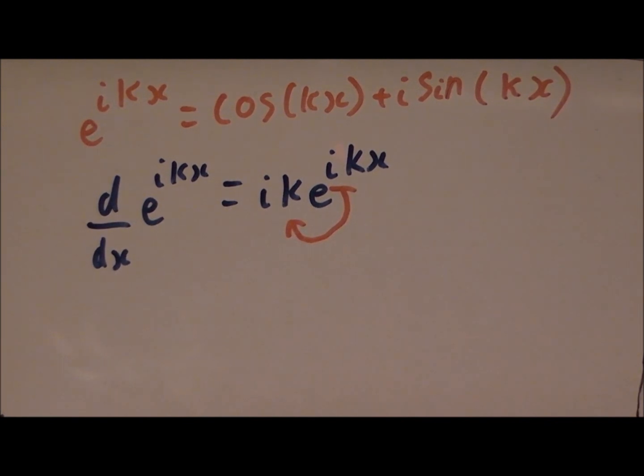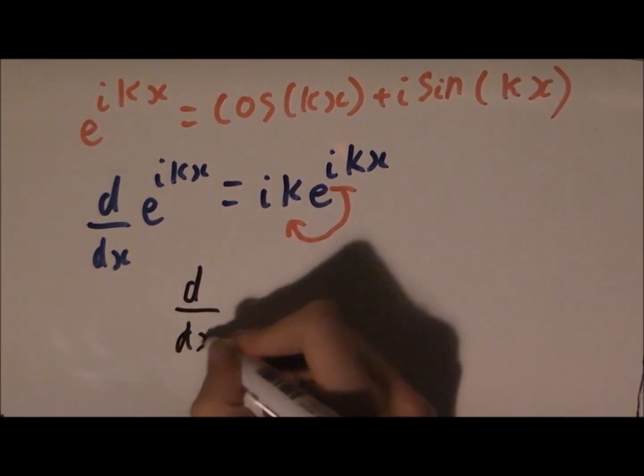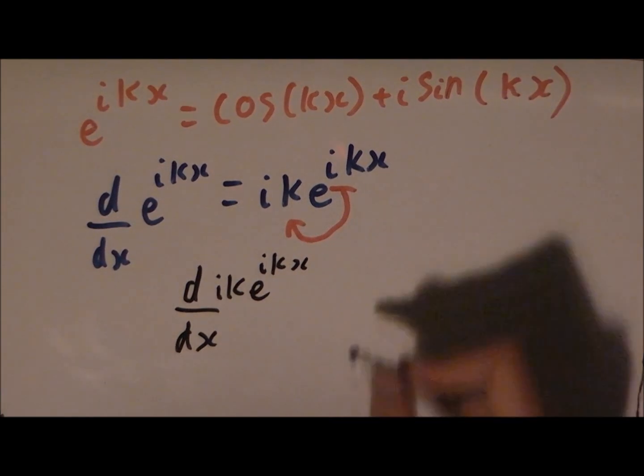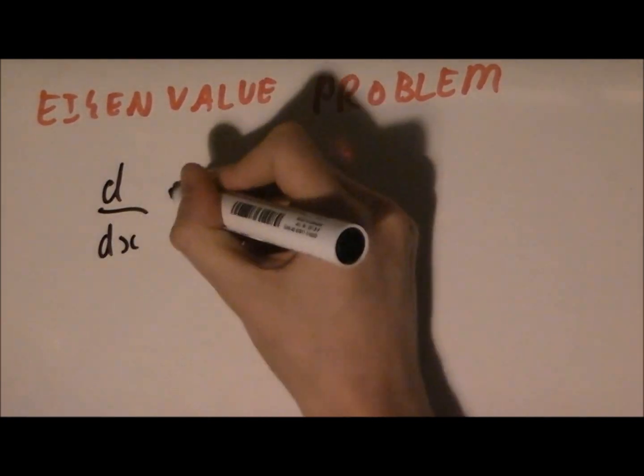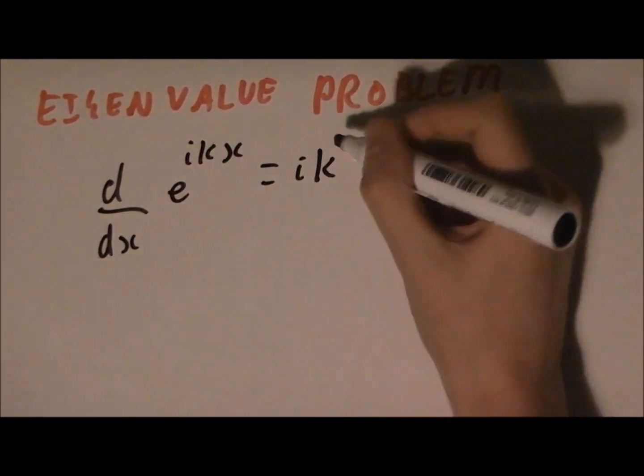So if we differentiate an exponential, we get the exponential back, and we generate this other term. We can do this again and get another factor out. Now we've pulled the k-squared term out of this exponential, so you might see where we're going with this.